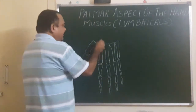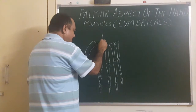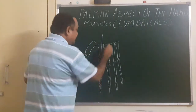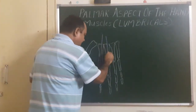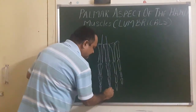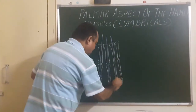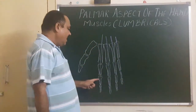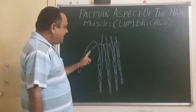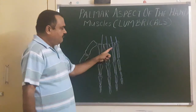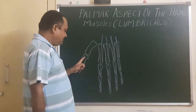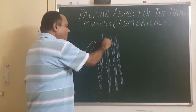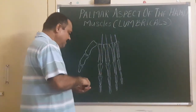Here is the tendon of the flexor digitorum profundus. These are the four tendons of flexor digitorum profundus. In this diagram, we can see the first, second, third, fourth, and fifth fingers with the proximal phalanx and distal phalanx indicated, and these four tendons of flexor digitorum profundus.